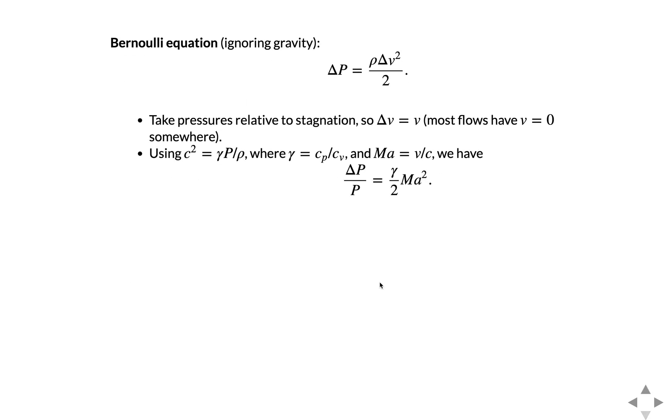We can look at that in some more detail by considering the Bernoulli equation. So if we ignore gravity then the Bernoulli equation says delta P over rho plus delta V squared over 2 is a constant. So we can rewrite it like this and here we'll just look at pressure relative to stagnation. So we'll just take delta V as velocity and write this as V squared. A lot of flows have velocity zero somewhere in the domain and if not then we can just consider these pressures relative to the changes in velocity anyway. So the sound speed is defined as sound speed squared is defined as gamma P over rho, or gamma is the ratio of heat capacities, C sub P over C sub V. For air this is 1.4 and is pretty constant, and then the Mach number is defined as V over C.